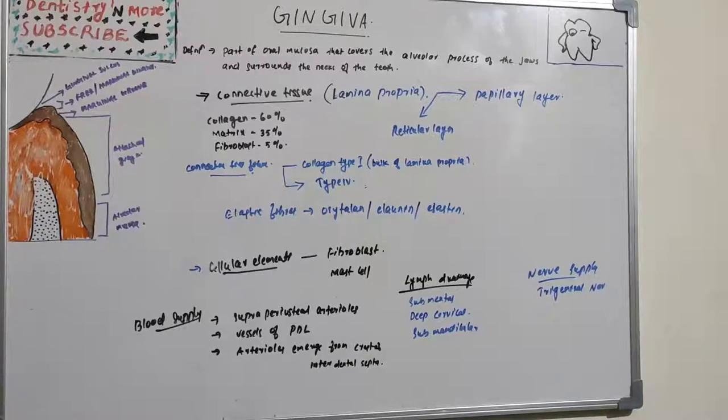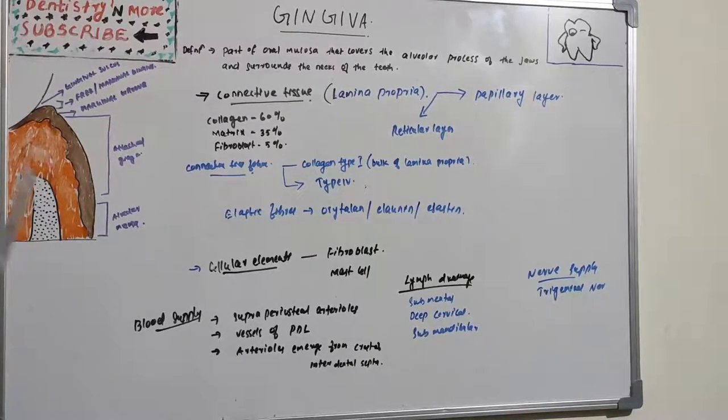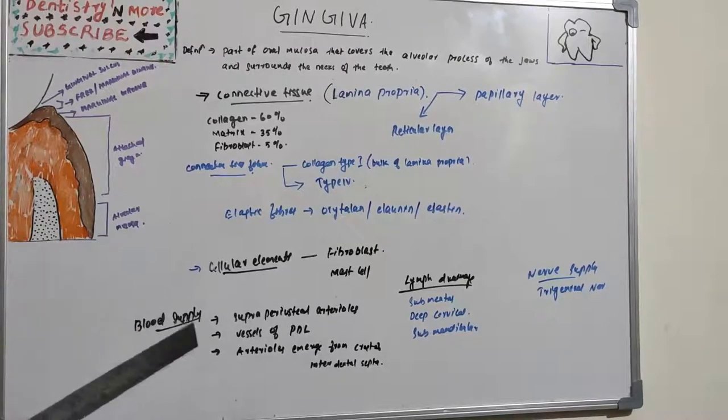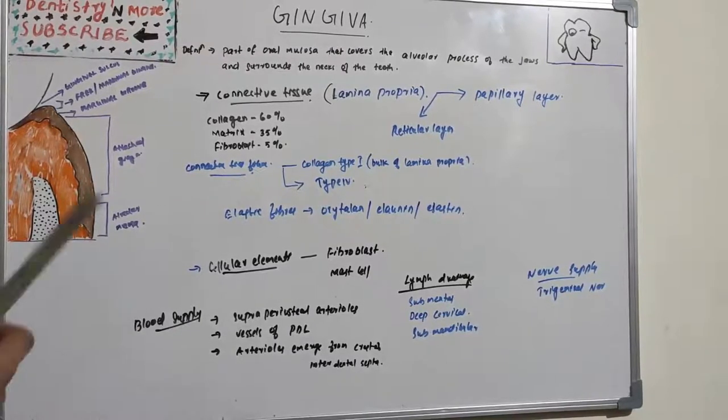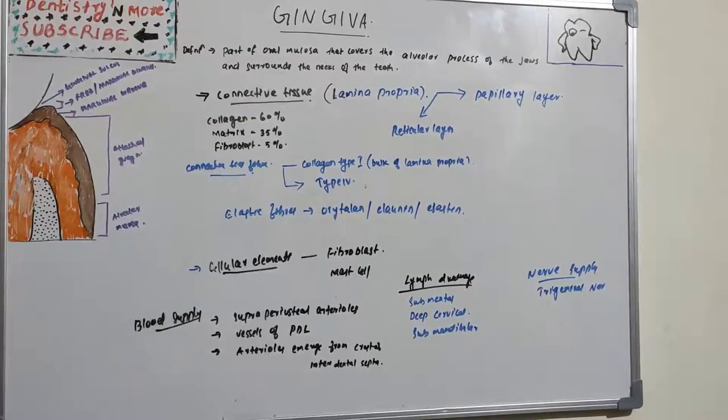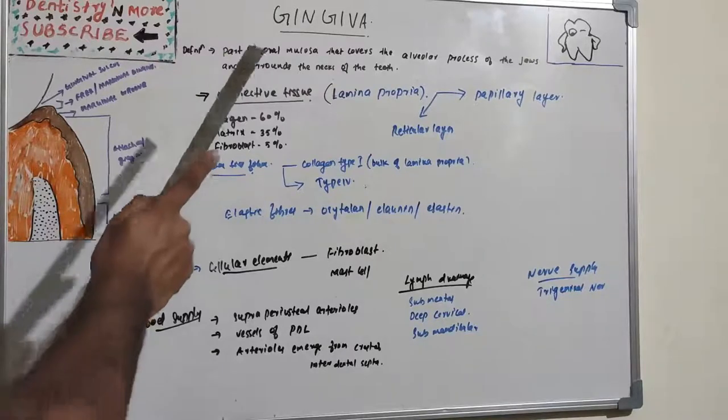So till now we were focusing on the epithelium and its various elements, various cells and gingival fibers and parts of gingiva. Now let's move on to the connective tissue. The connective tissue part is composed of collagen.